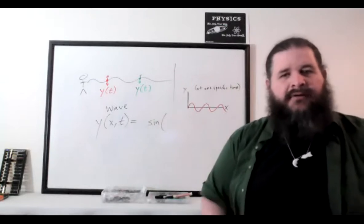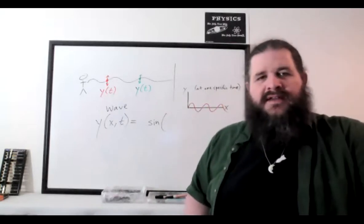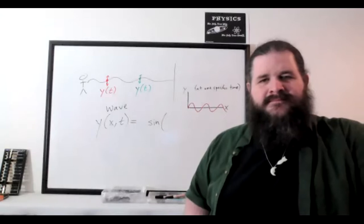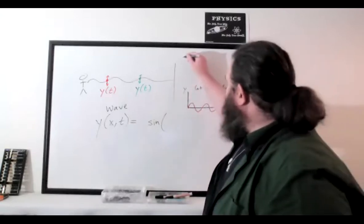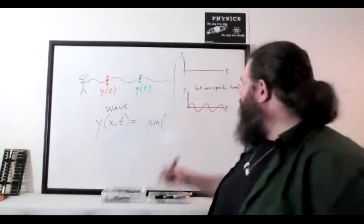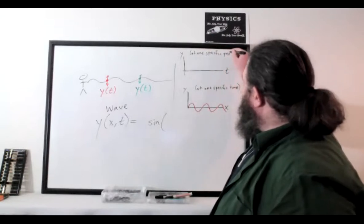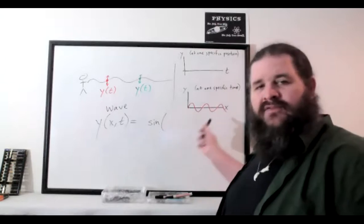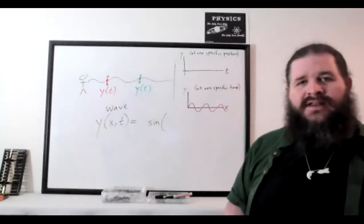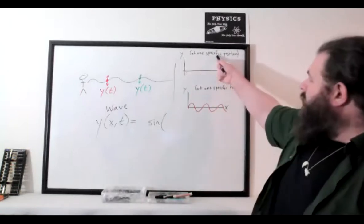We can also get a t versus y graph. The x versus y graph shows all x values but only one specific time. The t versus y graph, on the other hand, is at one specific position. The x versus y graph is talking about the whole rope at only one specific time — we're pausing the video. Whereas the t versus y graph allows time to pass, but we're only looking at one specific position.